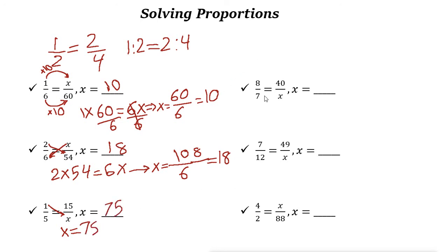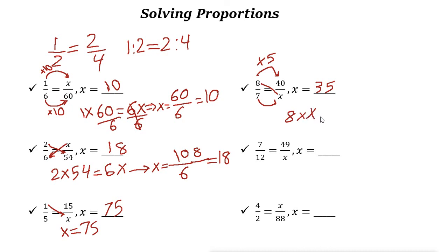Next one. You could also find the relationship between the two numerators: 8 times what number gives you 40? You need to multiply by 5. Do the same thing for the denominator — 7 times 5 is 35. So 8 over 7 equals 40 over 35. You could also use cross multiplication: 8 times x equals 7 times 40, and if you simplify, x is 35.